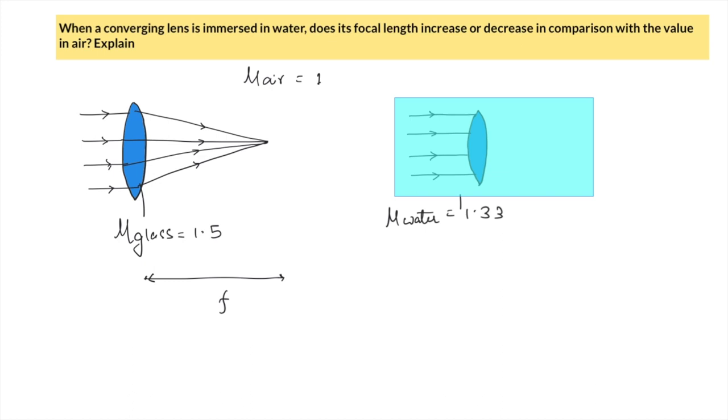Because of this change in μ, which is now 1.5 minus 1.33 relative to the earlier μ which was 1.5 minus 1, it will bend at a greater length. It will take a longer distance to converge because its bending capacity is now reduced.